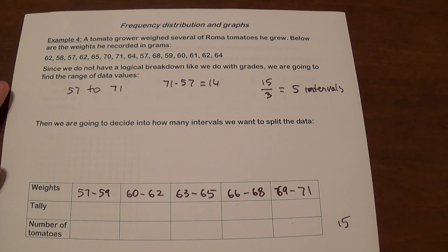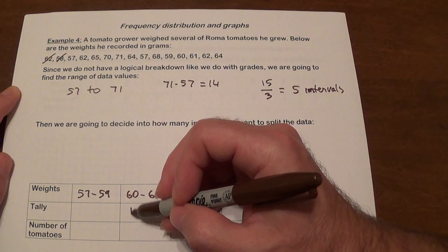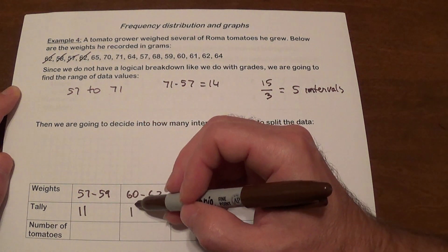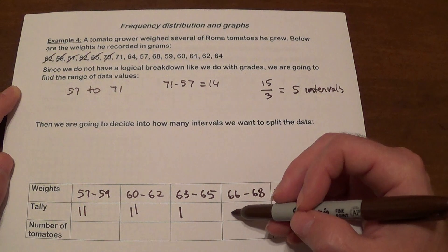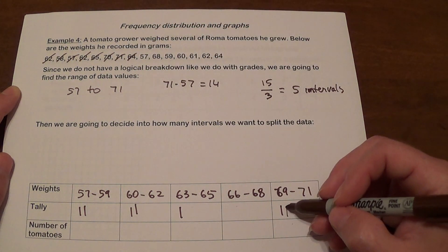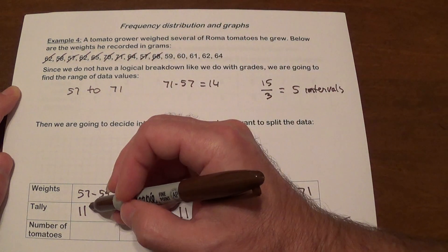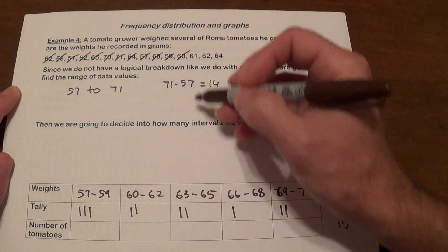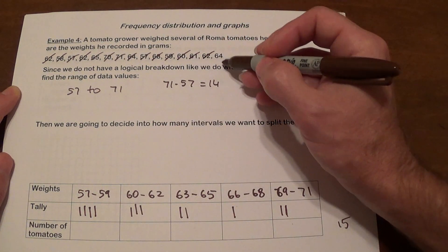So let's tally now. 62, 58, so 62, 58, 57, 62, 57, 62, 65, 70, 71, 64, 57, 68, 58, 59, 60, 61, 62, 64.